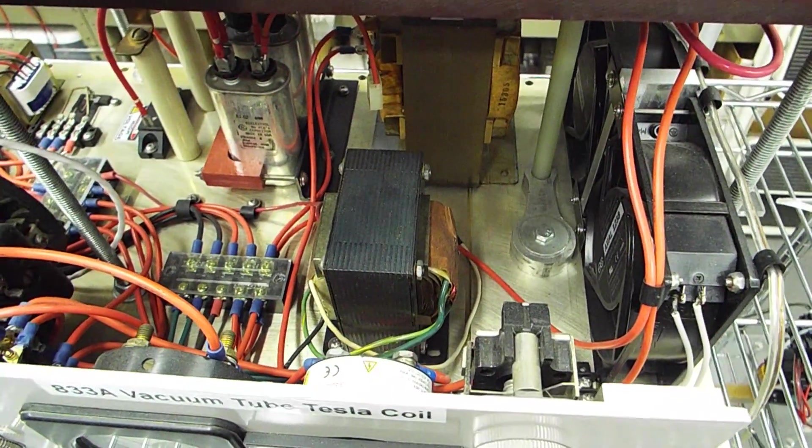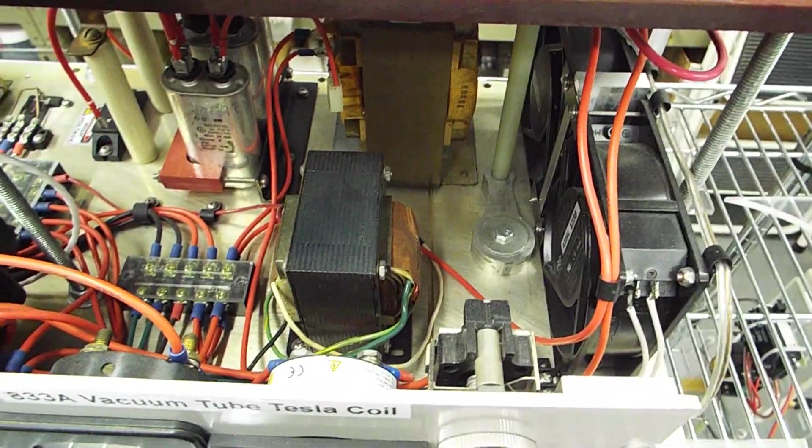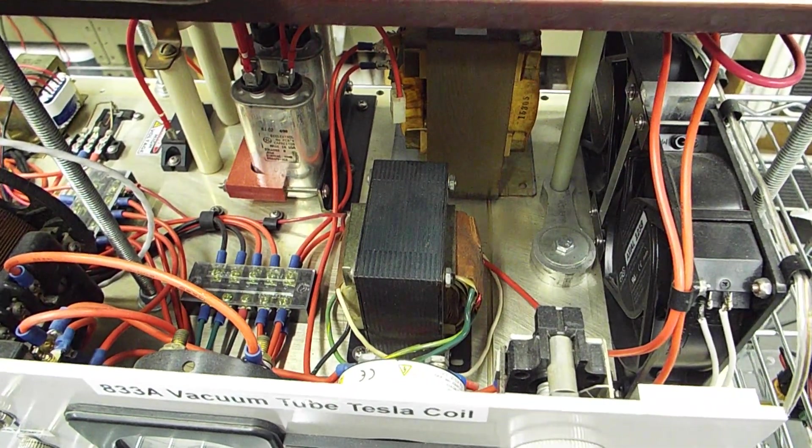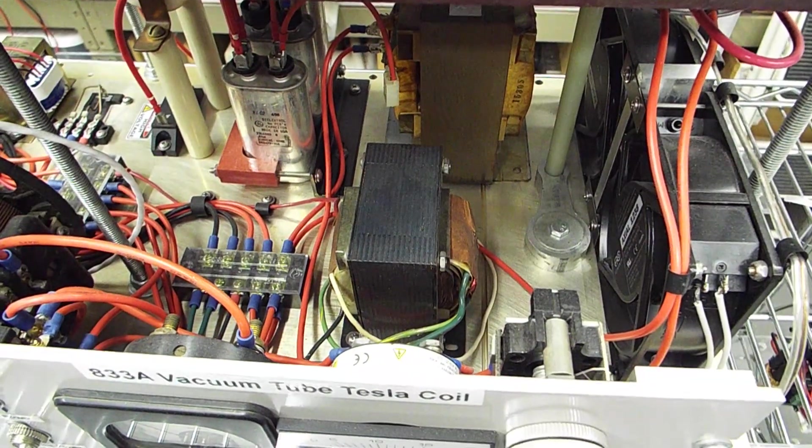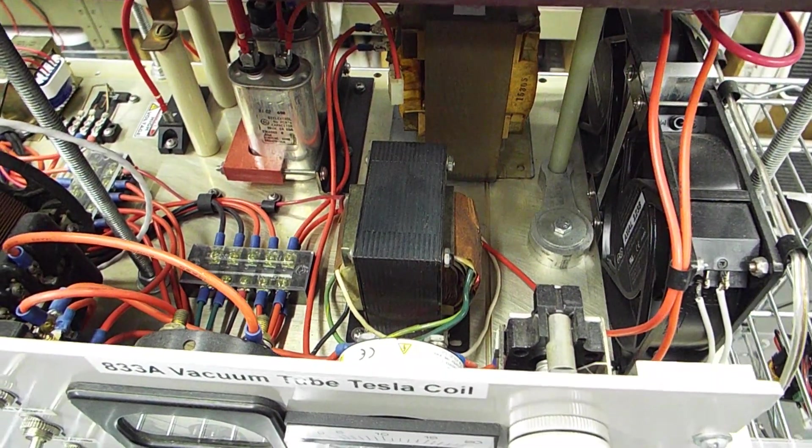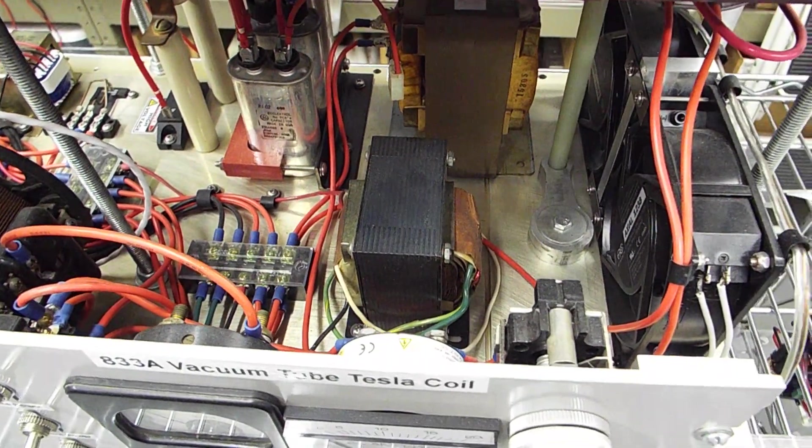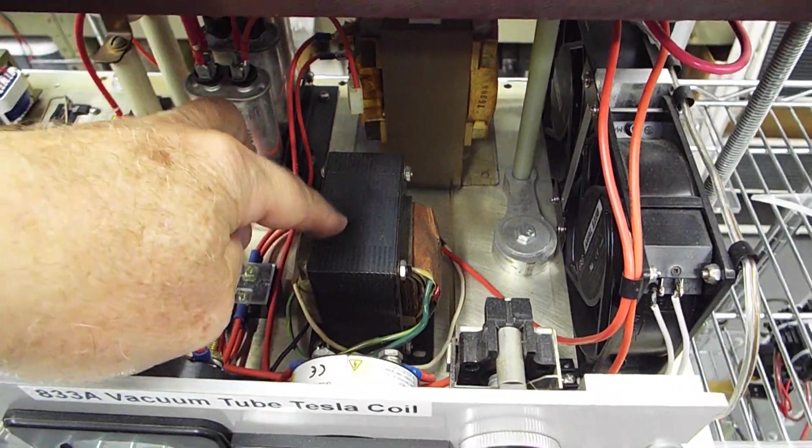I initially tried a rewound MOT, but they're so inefficient, it drew 500 watts of power with no load at all on it. So I wanted to get all I could out of the wall circuit without tripping the breaker. So I switched over to a real transformer.